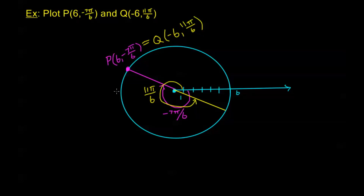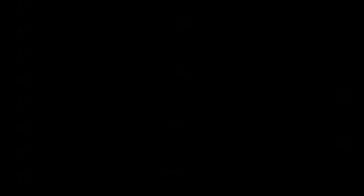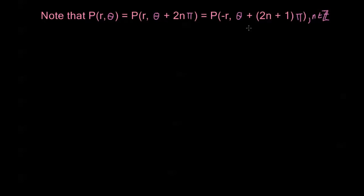This leads us to think: when else does this happen? What can we say about points being the same point even if they look a little bit different? We want to note that if we have a point P(r, theta), we can also write that point as P(r, theta + 2nπ), or as P(-r, theta + (2n+1)π), where n is some integer. In other words, a point (r, theta) is the same point as any point with the same r where the angle is theta plus any even increment of π, or the point (-r) where we have theta plus any odd increment of π. 2n is always even, 2n+1 is always odd, and that's why we write it this way.